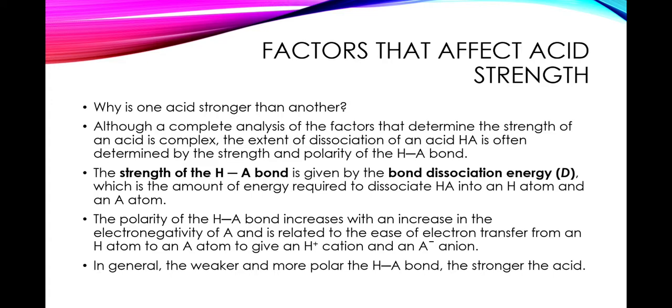Generally there are two factors that account for acid strength: one is strength and the other is polarity of the H-A bond, where H is a hydrogen atom and A is some other atom. The strength of the H-A bond is given by the bond dissociation energy (D), which is the amount of energy required to dissociate HA into an H atom and an A atom. The polarity increases with an increase in the electronegativity of A and is related to the ease of electron transfer from an H atom to an A atom to give an H+ cation and an A- anion. In general, the weaker and more polar the H-A bond, the stronger the acid.